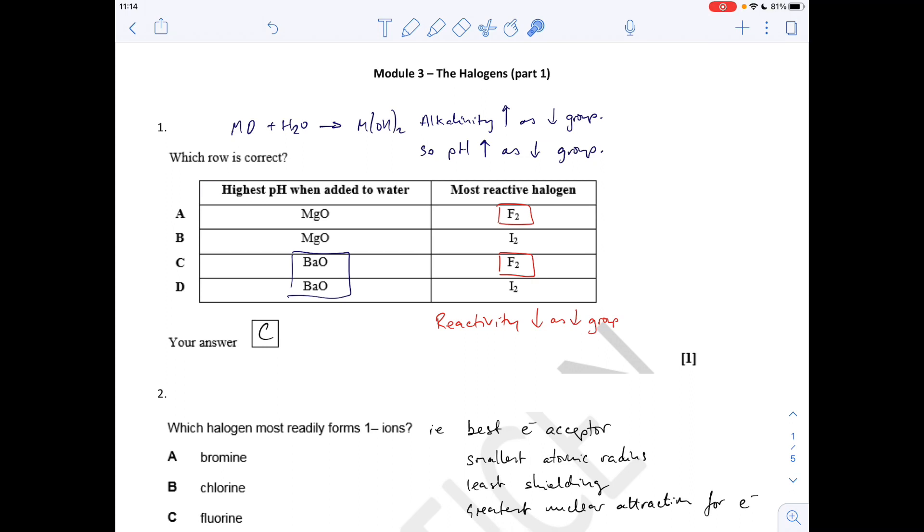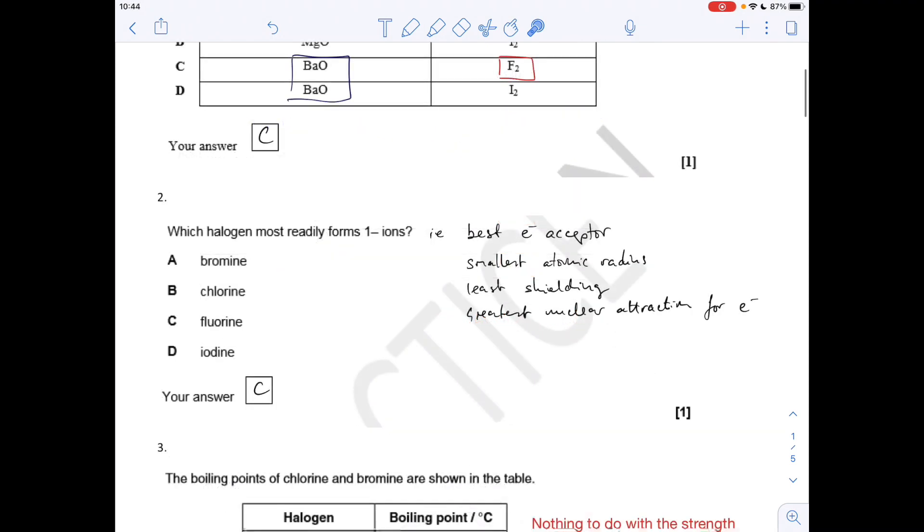Most reactive halogen - well reactivity of the halogens decreases as you go down the group, so obviously fluorine's the most reactive halogen. Therefore row C is the right answer.